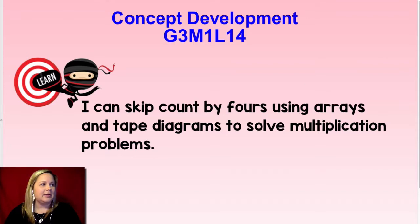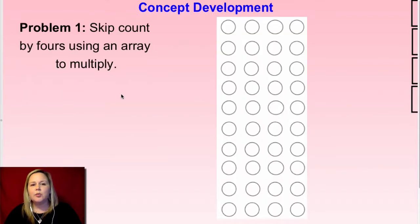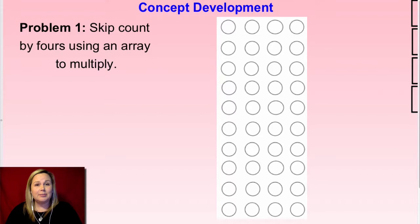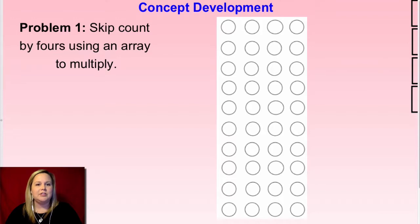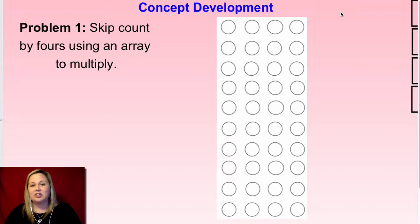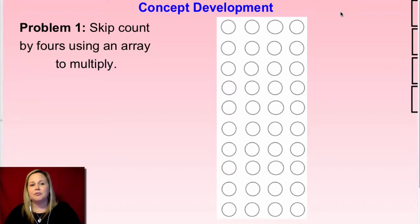We're going to skip count by fours using the array to be able to multiply. First we're going to skip count, then we're going to talk about how that relates to multiplication. We're going to count to 40 using this array — we're going to hum the number as we point to each dot, and for the last dot in each row we're going to say that number out loud and write it to the right of the row.